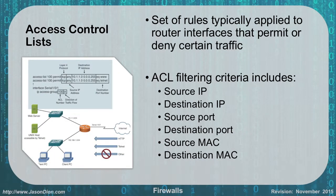Another thing we deal with regarding firewalls is access control lists (ACLs). These are the set of rules applied to the interface of a router or firewall that permit or deny traffic of certain types. ACL filters contain things such as source and destination IPs, source and destination ports, or source and destination MAC addresses.